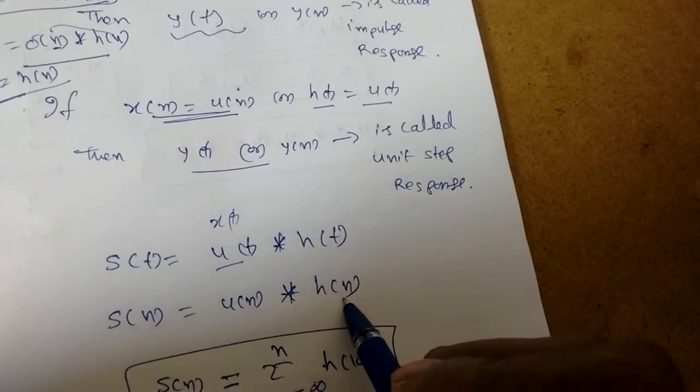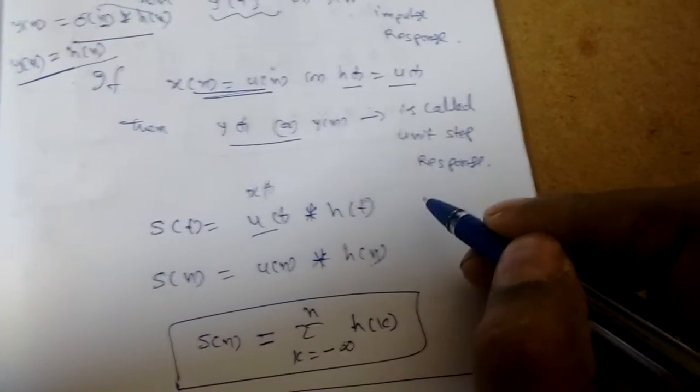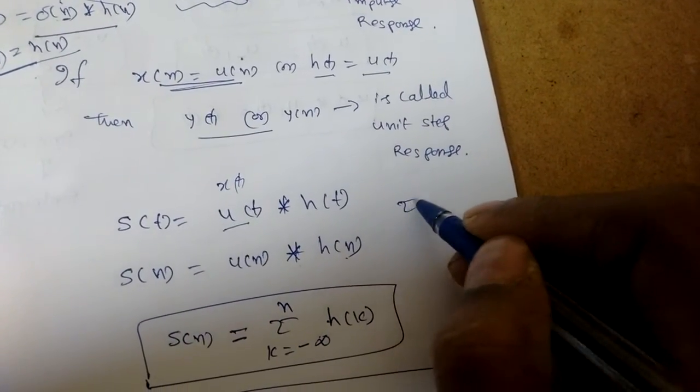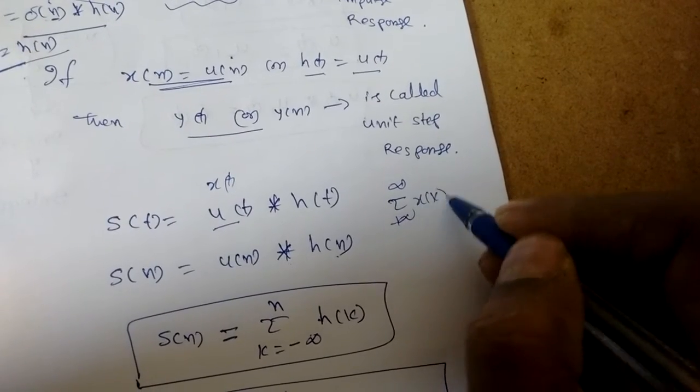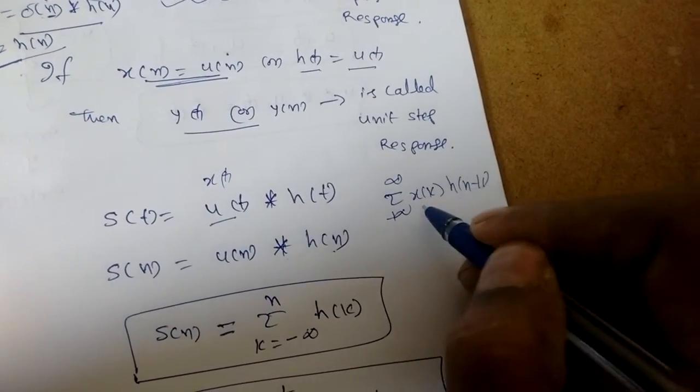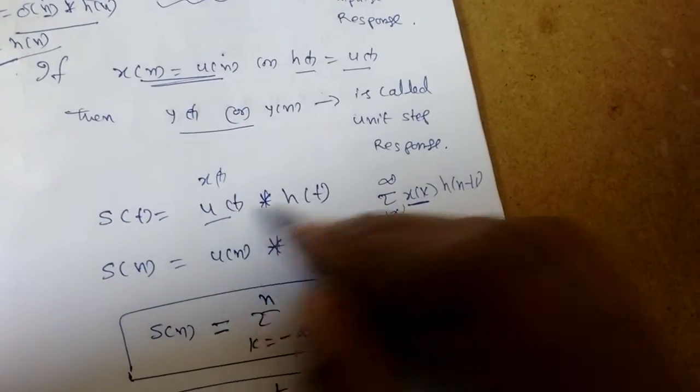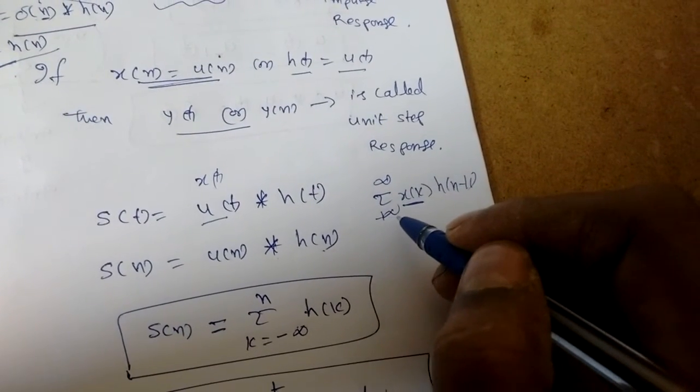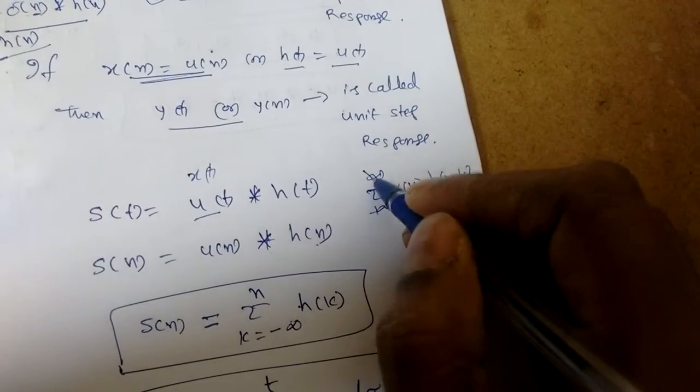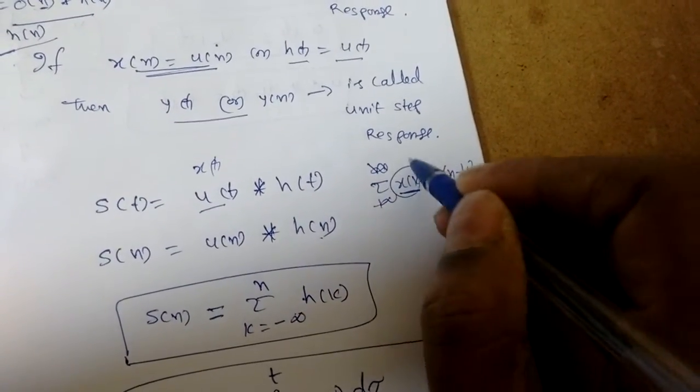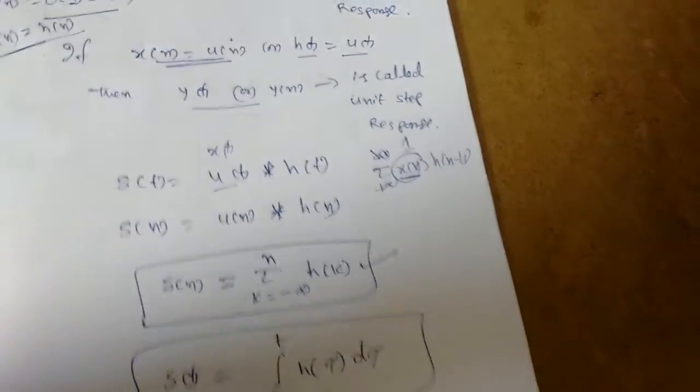We know the formula for convolution. If it is discrete: minus infinity to infinity, x(k) h(n - k). X(k) is given as u(t), so the summation is up to n only. The unit step is only one, so I will get h(k), which is the summation of the impulse response.